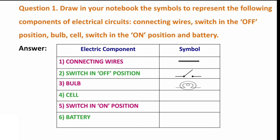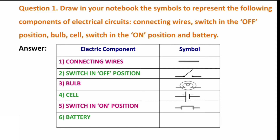Next one is bulb, which can be represented by this symbol. Next one is cell — this is the symbol of a cell. It has one terminal longer and another shorter. The longer terminal is considered as the positive terminal and the shorter one is the negative terminal. Next one is switch in on position — this represents a closed path. And last one is battery. When more than one cell is connected in series, we consider it a battery. One cell's positive terminal should connect to the negative terminal of the other; similar polarity connections should not be made.